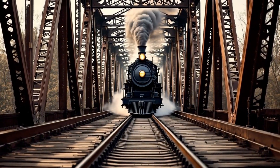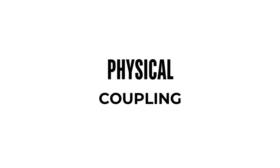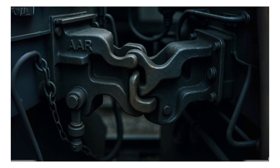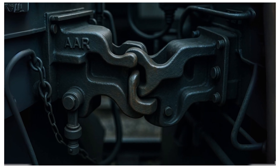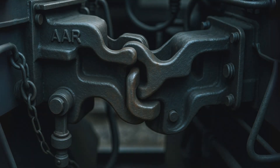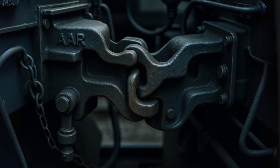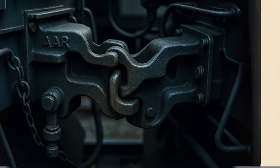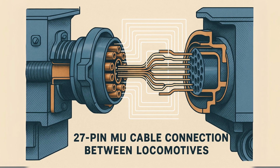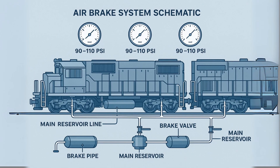Multiple unit operation begins with proper mechanical and electrical coupling. Modern locomotives use standardized AAR couplers with integrated electrical connections through jumper cables. These 27-pin MU cables carry control signals operating at 74 volts DC. The pneumatic system utilizes main reservoir airlines and brake pipe connections, typically operating at 90 to 110 PSI for main reservoir pressure and 90 PSI for brake pipe pressure.